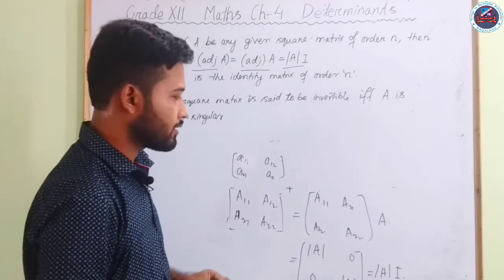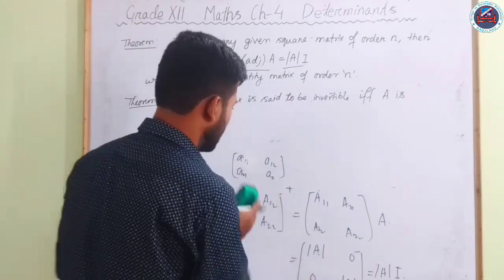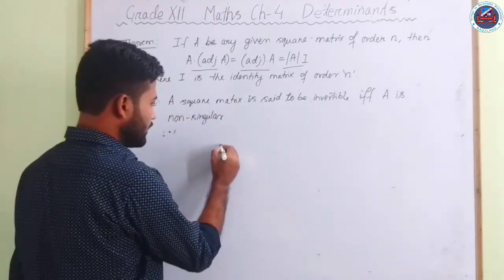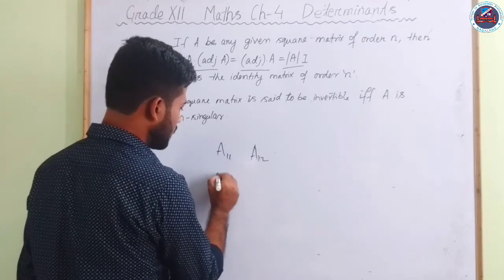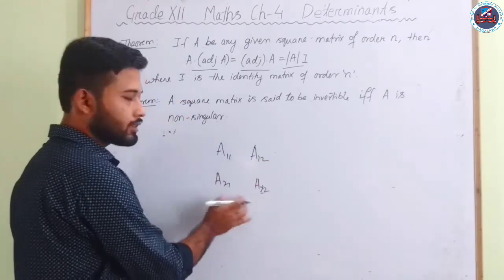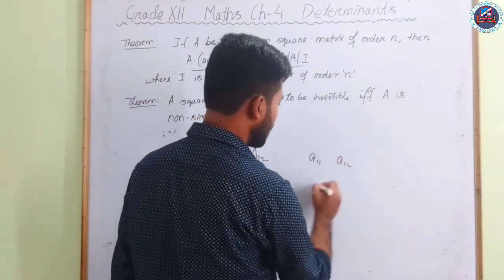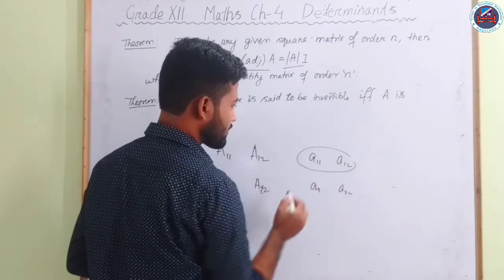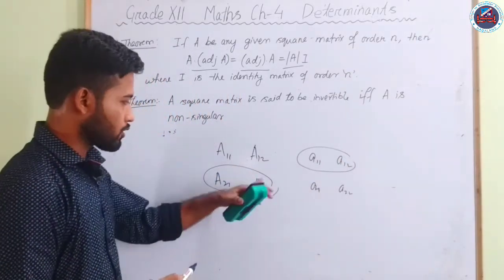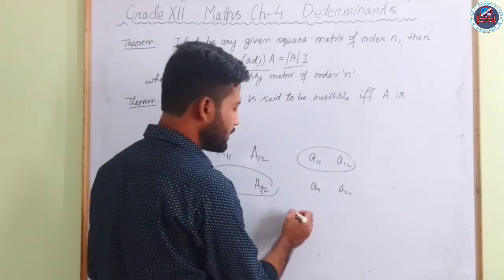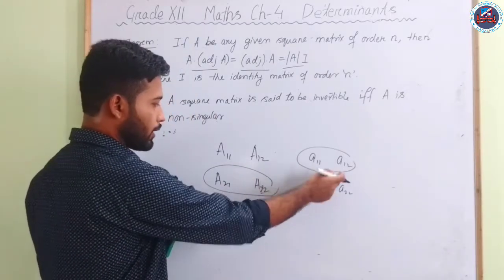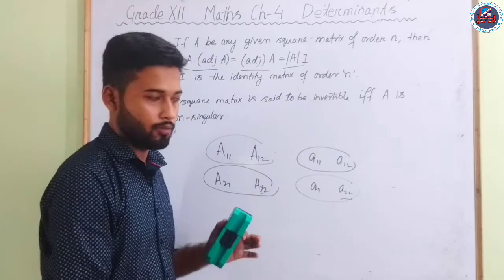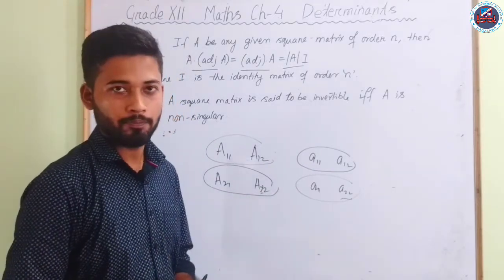Another important point: if A₁₁, A₁₂, A₂₁, A₂₂ are the cofactors of elements a₁₁, a₁₂, a₂₁, a₂₂, then multiplying cofactors of one row with the elements of a different row gives 0. For example, multiplying A₁₁ and A₁₂ with a₂₁ and a₂₂ gives 0. The same is true for columns.